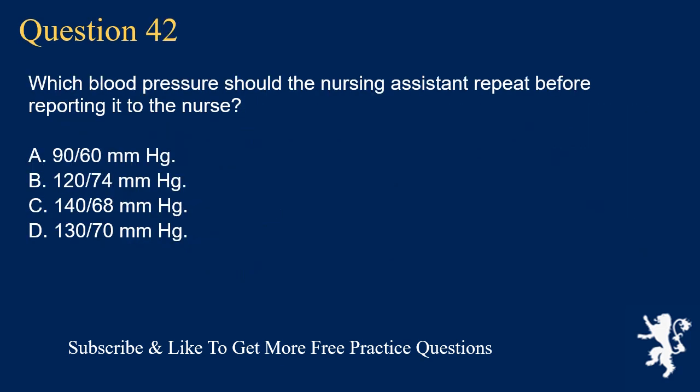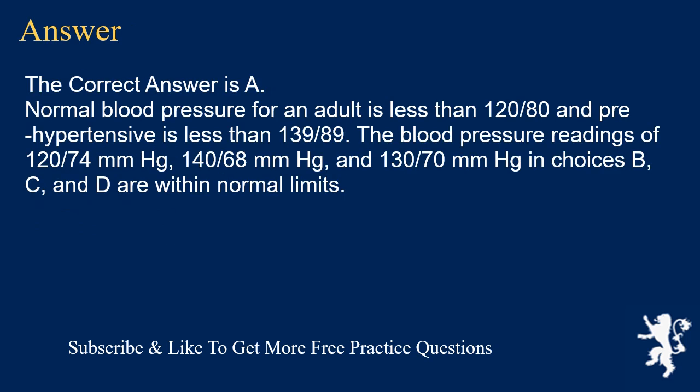Question 42. Which blood pressure should the nursing assistant repeat before reporting it to the nurse? A. 90/60 mmHg. B. 120/70 mmHg. C. 140/68 mmHg. D. 130/70 mmHg. The correct answer is A. Normal blood pressure for an adult is less than 120/80 and pre-hypertensive is less than 139/89. The blood pressure readings of 120/70, 140/68, and 130/70 in choices B, C, and D are within normal limits.